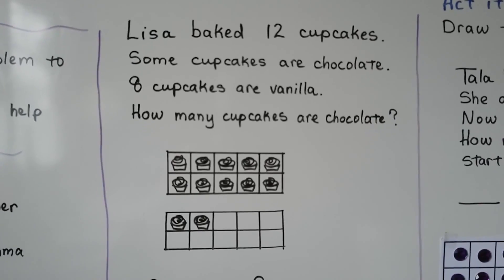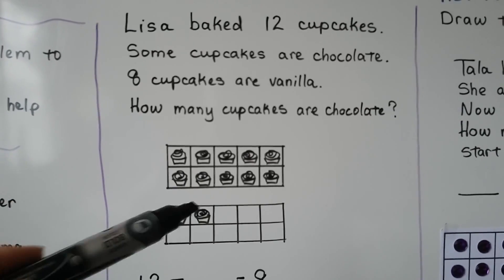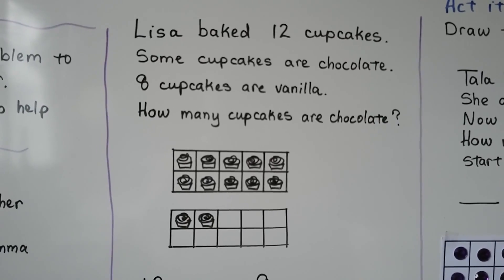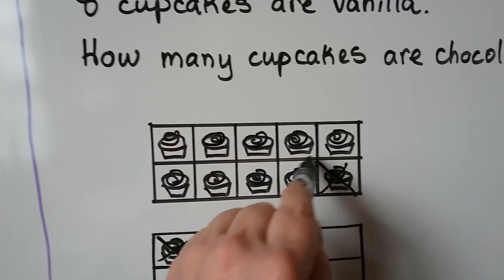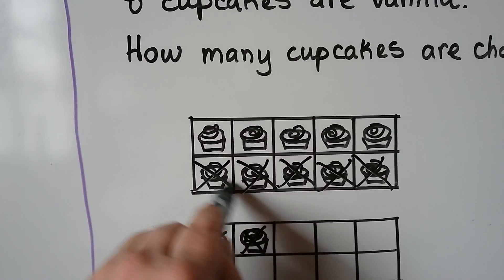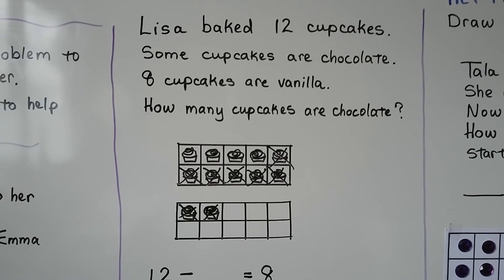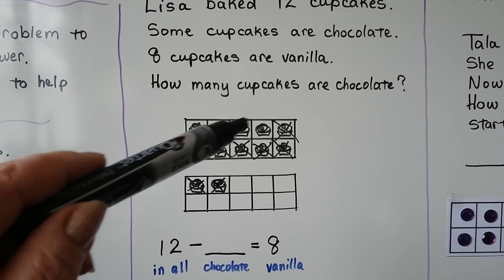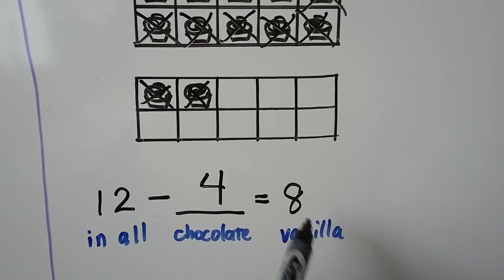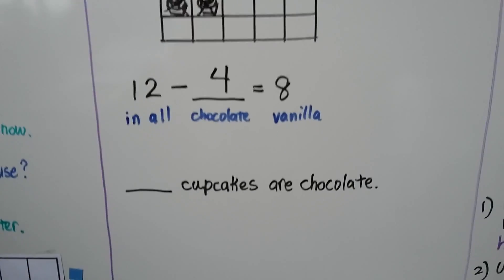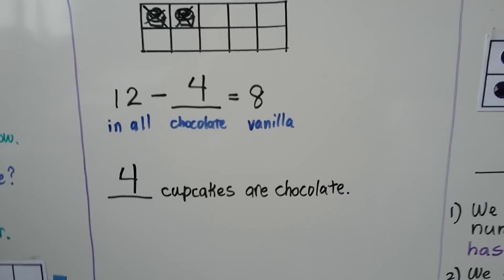And how will we use the information? We can use a 10 frame to help us act it out. There are 12 cupcakes: 10, 11, 12. 8 are vanilla, so let's cross out the vanilla ones — 1, 2, 3, 4, 5, 6, 7, 8. We crossed out the vanilla ones, so the rest are chocolate. How many are chocolate? 1, 2, 3, 4. There are 12 in all, 4 are chocolate. That equals 8 vanilla. So 4 cupcakes are chocolate, and 12 minus 4 is equal to 8.